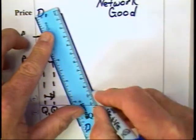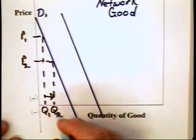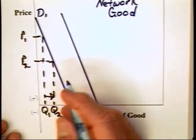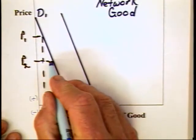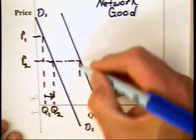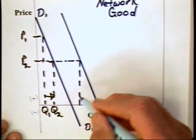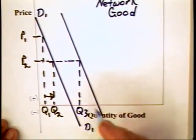Because with more units being consumed, in the case of Windows, there would be more applications written for Windows. And as a result, the value of Windows goes up. And in future time periods, the quantity demanded can, in fact, go to Q3. Lower the price even more to P3. And that is, in today's time period, the quantity demanded may go to Q4.